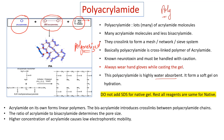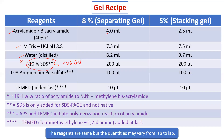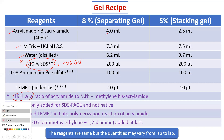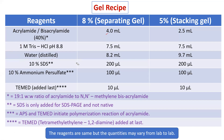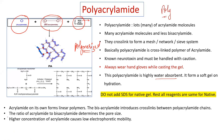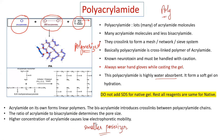Acrylamide on its own forms linear polymers; bisacrylamide introduces cross-links between polyacrylamide chains. Cross-linking is only possible when you add bisacrylamide. The ratio of acrylamide to bisacrylamide determines pore size. The standard ratio is 19:1 weight-by-weight of acrylamide to bisacrylamide. If you increase the amount of acrylamide, you may not get the desired pore size — higher concentration causes low electrophoretic mobility because of extremely small pore sizes, making it hard for protein molecules to pass through.